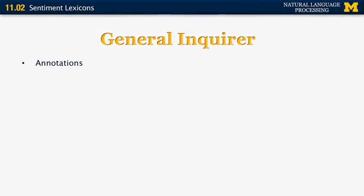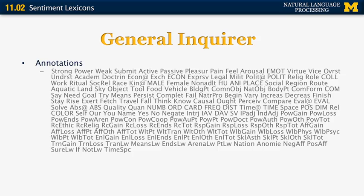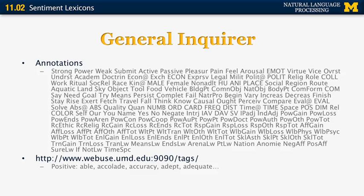The General Enquirer is a very large dataset that includes annotations not just for polarity but also for many different effects and other information — for example, powerful versus weak, active versus passive, pleasure versus pain, and so on. It's available at a website at the University of Maryland, and a small section of it is specifically about positive and negative words. It includes positive words like able, accolade, accuracy, adept, and adequate, and negative words such as addiction, adversity, adultery, affliction, and aggressive.